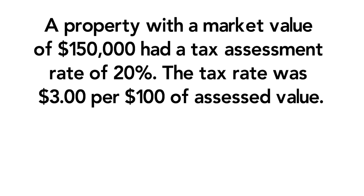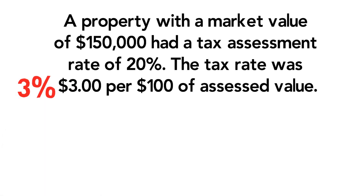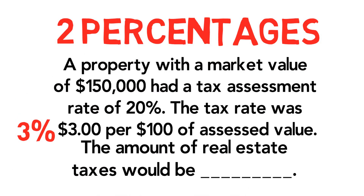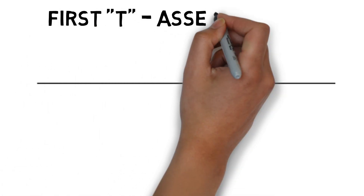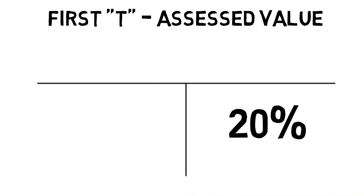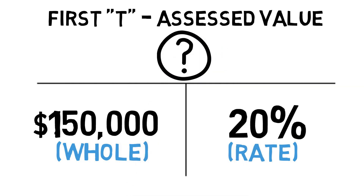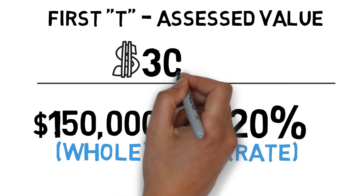A property with a market value of one hundred and fifty thousand dollars had a tax assessment rate of twenty percent. The tax rate was three dollars per hundred of assessed value. Per hundred means percent, so that's the same as three percent. They give us two percentages, so I draw two Ts. In the first T, twenty percent goes on the bottom right, and the total market value of one hundred and fifty thousand dollars is the whole amount on the bottom left. Multiplying straight across: one hundred and fifty thousand times twenty percent gives us an assessed value of thirty thousand dollars.